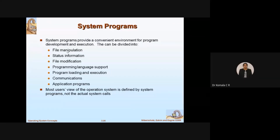For file manipulation, while developing the program you can read, write, override, and make any changes required. Then there is status information, which includes details such as how many jobs you have, how many jobs are completed, which address a program is stored at, and the status of each program among the 10 you may have.